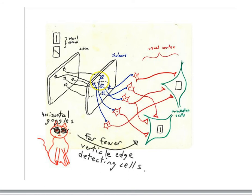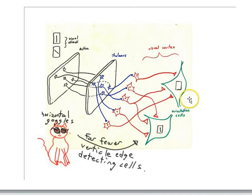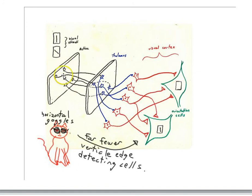You get a synapse in the thalamus — here are your thalamus cells. Thalamus cells send axons up to visual cortex. Here are some visual cortex cells, and here are some other cells in visual cortex. These green cells are going to be what we call the edge detectors or orientation cells. We're going to find that this cell responds only when there is a vertical edge projected onto the retina, and this cell will respond only when there is a diagonal edge projected onto the retina.